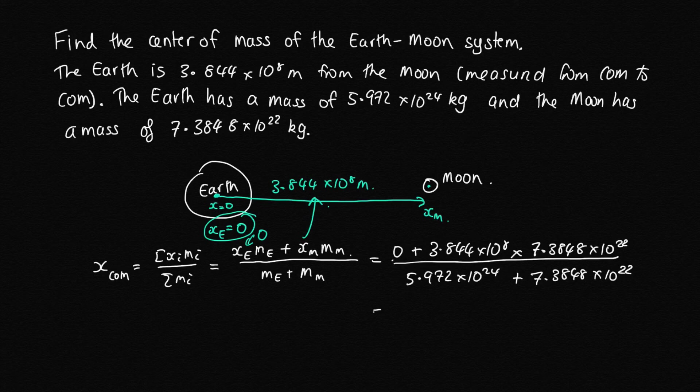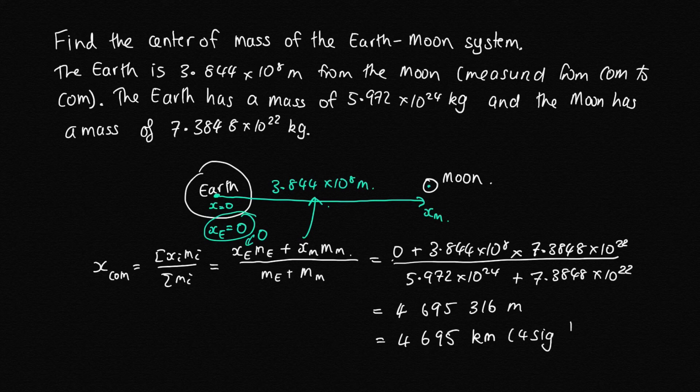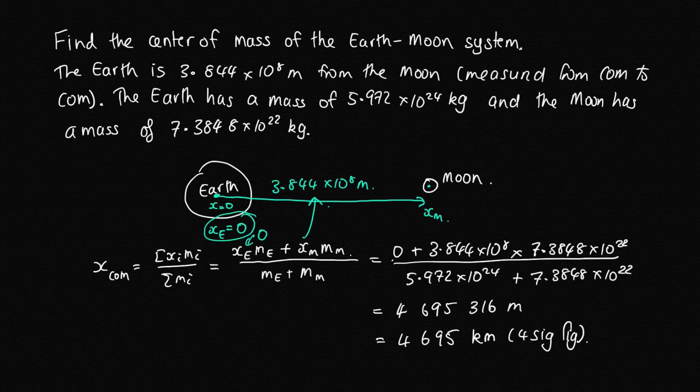Now what we can do is enter this into the calculator and solve it. When we do that, we get 4,695,316 meters. If we divide it by a thousand, it'll be in kilometers, so that's 4,695 kilometers. Let's give it to four significant figures, because the Earth-Moon distance is given with four significant figures.